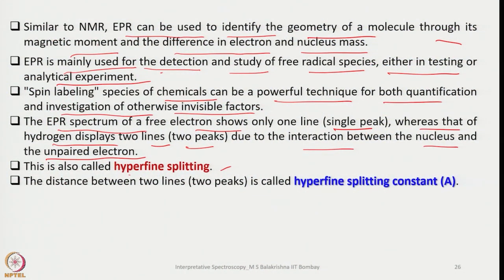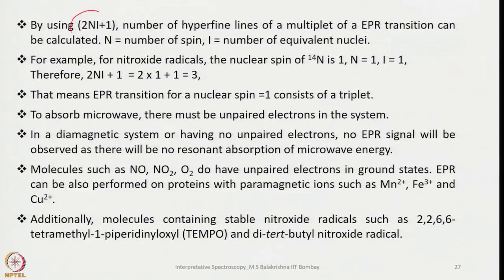In NMR we call this the coupling constant. Using the simple rule 2NI + 1, the number of hyperfine lines of a multiplet of an EPR transition can be calculated, where N is the number of equivalent nuclei and I is the nuclear spin. For example, for nitroxide radicals the nuclear spin of ¹⁴N is 1, so N equals 1 and I equals 1; therefore 2NI + 1 gives 3 lines, meaning the EPR transition for a nuclear spin of 1 consists of a triplet.